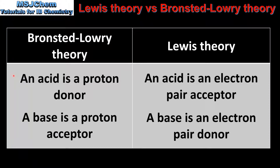In the Bronsted-Lowry theory, an acid is a proton donor and a base is a proton acceptor. In the Lewis theory, an acid is an electron pair acceptor and a base is an electron pair donor. Next we'll look at examples to compare the two theories.